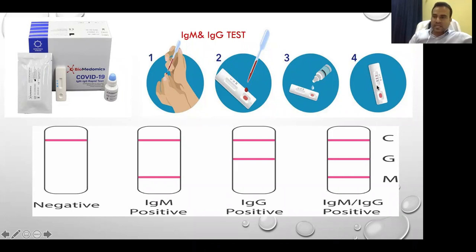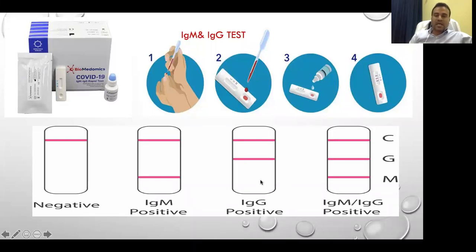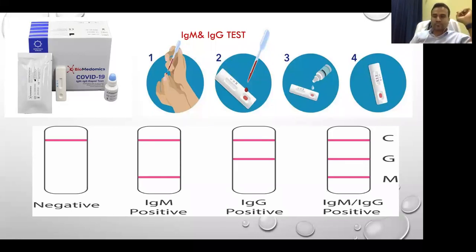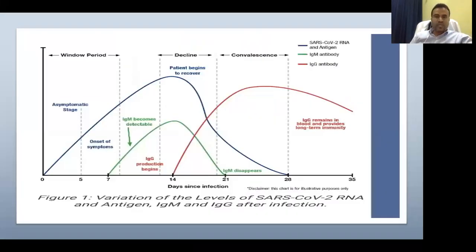On the rapid test kit, C is the control, G is for IgG, and M is for IgM. If the patient is not infected, it will be negative. IgM will be positive within five to seven days. Then IgG appears — around 15 to 20 days, both IgG and IgM will be positive. There is a window period, then a decline and convalescent stage.